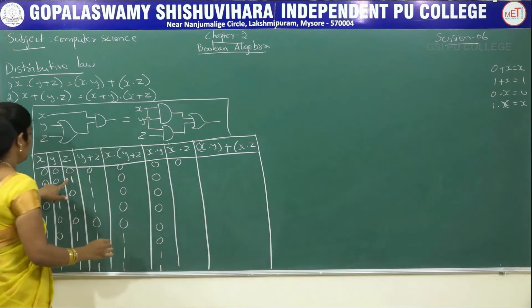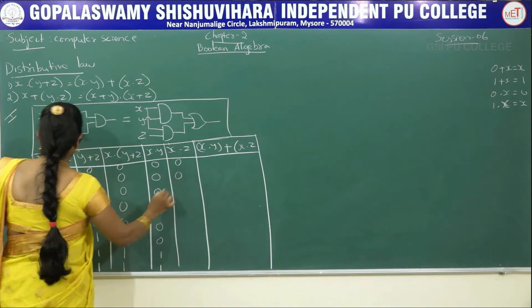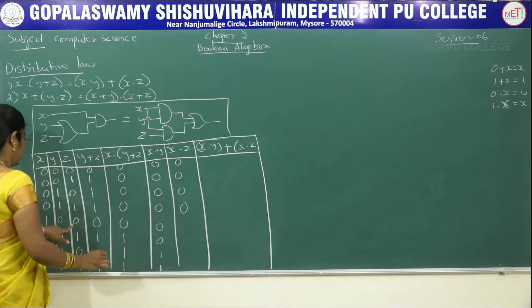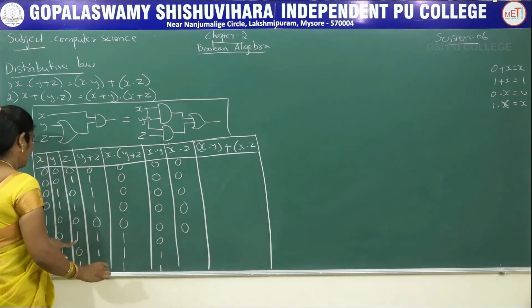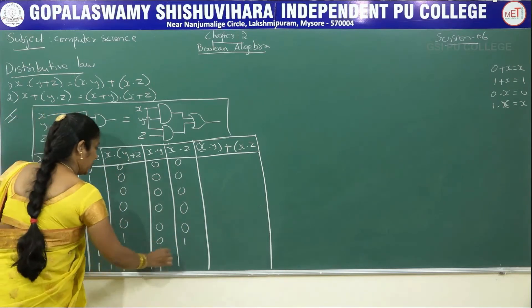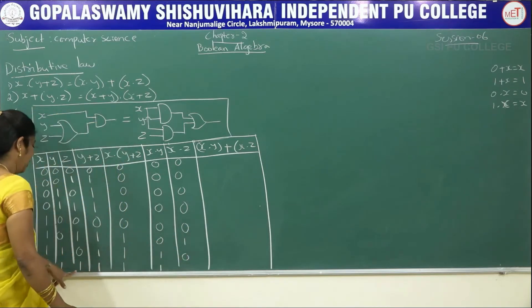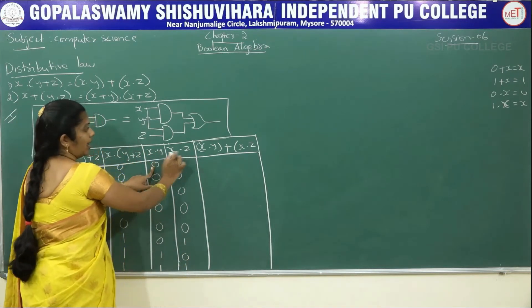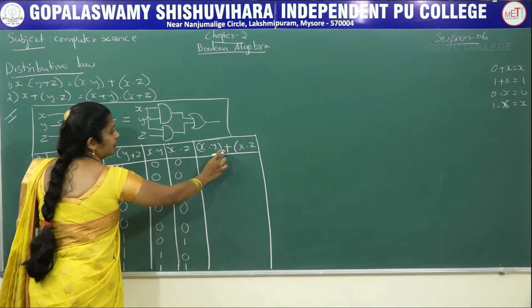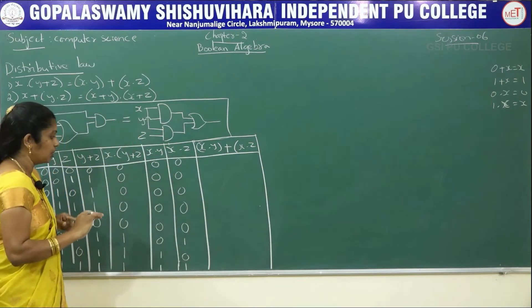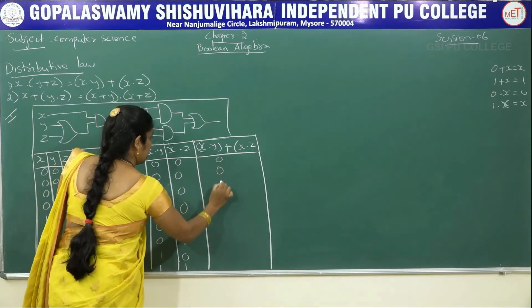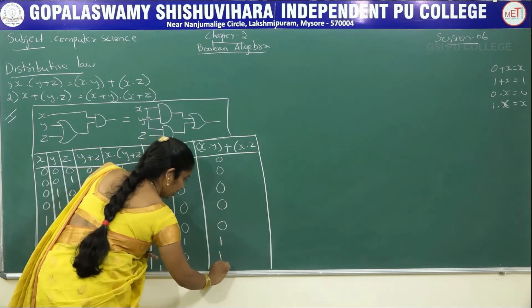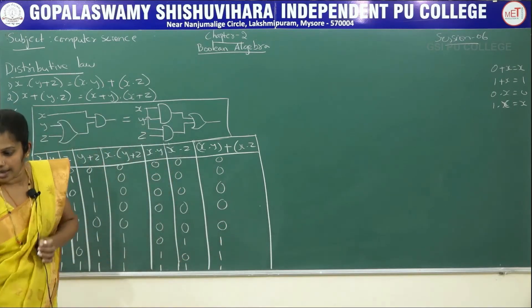For x·z, taking x and z columns: 0·0=0, 0·1=0, 0·0=0, 0·1=0, 1·0=0, 1·1=1, 1·0=0, 1·1=1. Finally for x·y plus x·z, plus operator means if any one input is true, output is true: 0, 0, 0, 0, 0, 1, 0, 1 — wait, results are 0,0,0,1,1,1. We can see x·(y+z) equals x·y + x·z.